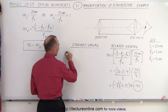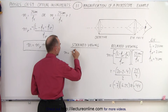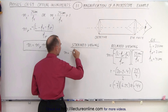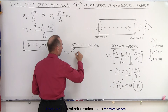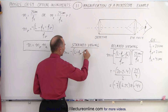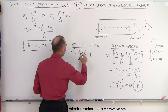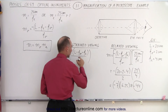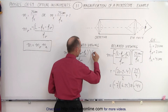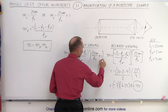Again, the magnification is equal to minus, in parentheses, the length of the microscope minus the focal length of the objective minus the focal length of the eyepiece, all divided by the focal length of the objective — that's for the objective lens — times 25 centimeters divided by the focal length of the eyepiece, plus 1.